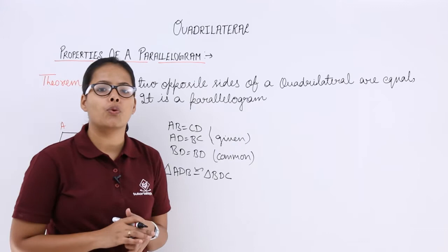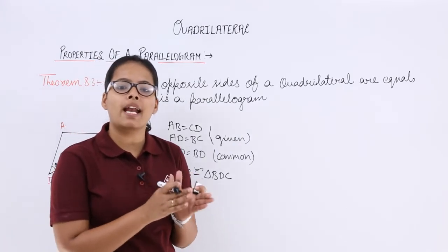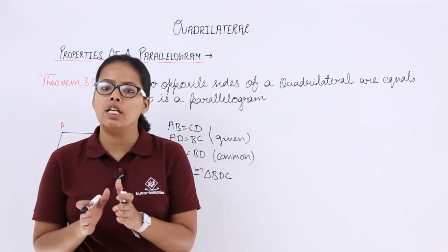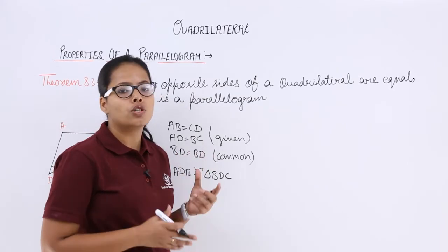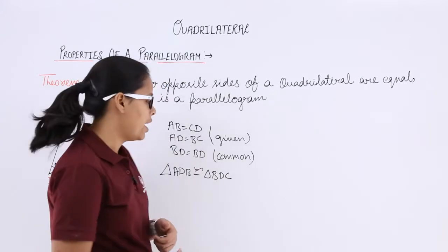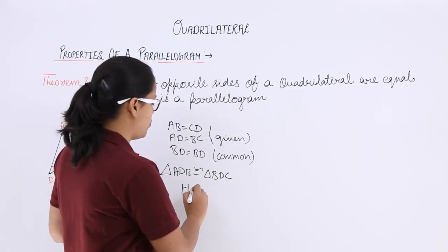In theorem 8.2, what we proved is that in a parallelogram opposite sides are equal. It has been given to you that opposite sides are equal. So, of course, it will be a parallelogram. Hence, proved.